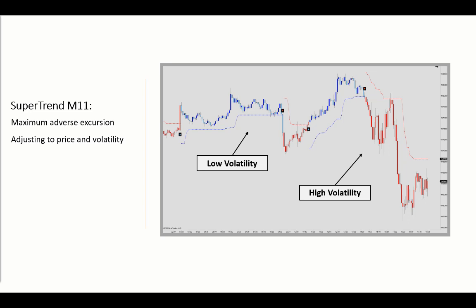The internal mechanics of the Supertrend indicator is comparable to the chandelier stop. But for the long scenario, you will not set the trailing stop based on the highest high, but from a median plus an average true range period. Both values are calculated for the last bar, preventing the trailing stop level from adjusting during the current bar, so that stays in place.